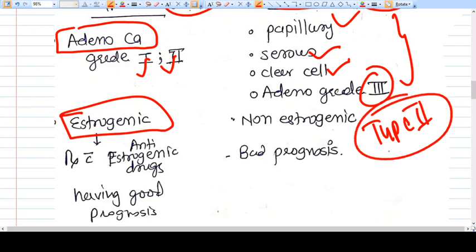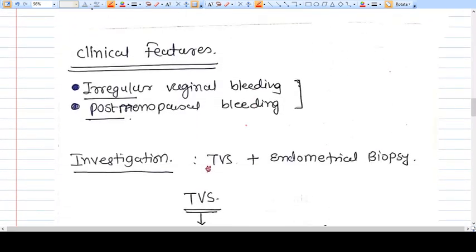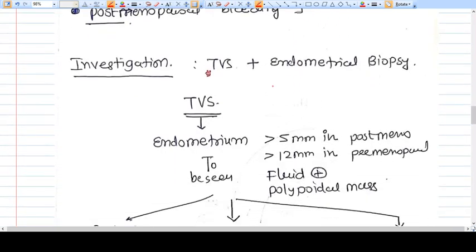But if Type 2 endometrial cancer is there, then it is basically not dependent on estrogen. So they have non-estrogenic causative factors. So it is a bad prognosis. Now clinical features: irregular vaginal bleeding, postmenopausal bleeding, endometrial hyperplasia.